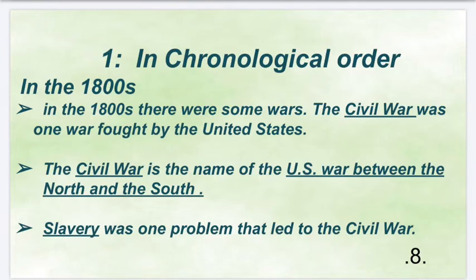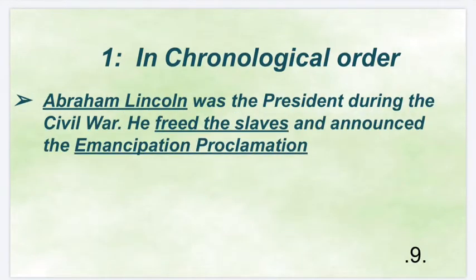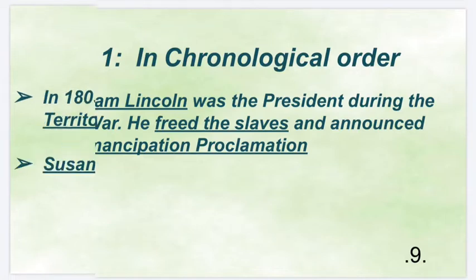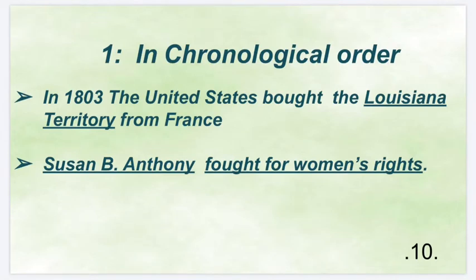In the 1800s, there were some wars. The Civil War was one war fought by the United States — it is the name of the war between the North and the South. Slavery was one problem that led to the Civil War. Abraham Lincoln was the president during the Civil War. He freed the slaves and announced the Emancipation Proclamation. In 1803, the United States bought the Louisiana Territory from France. Susan B. Anthony fought for women's rights.